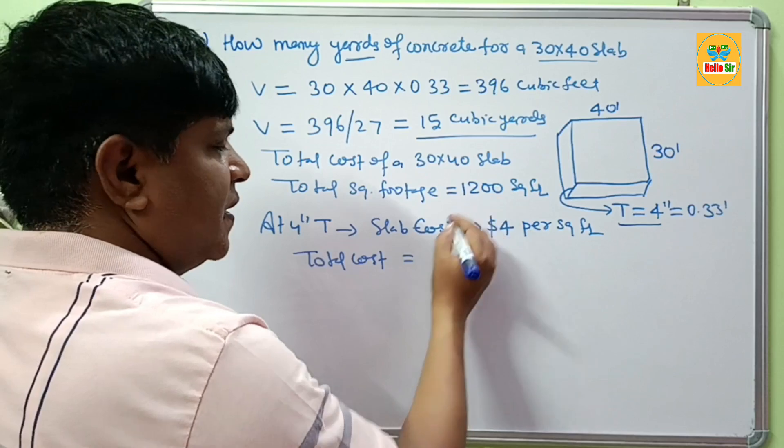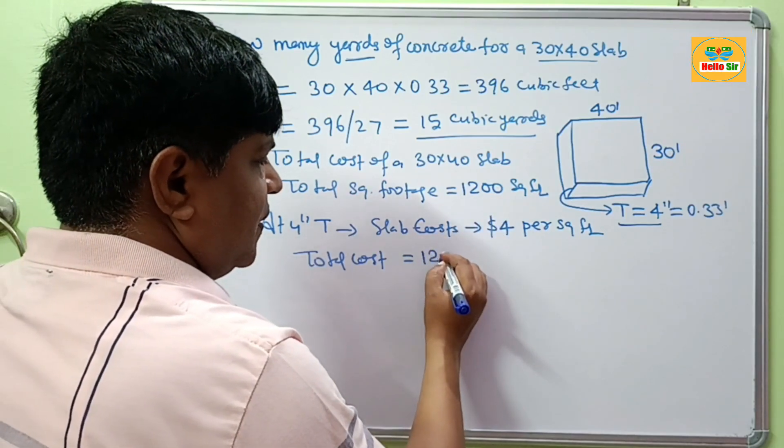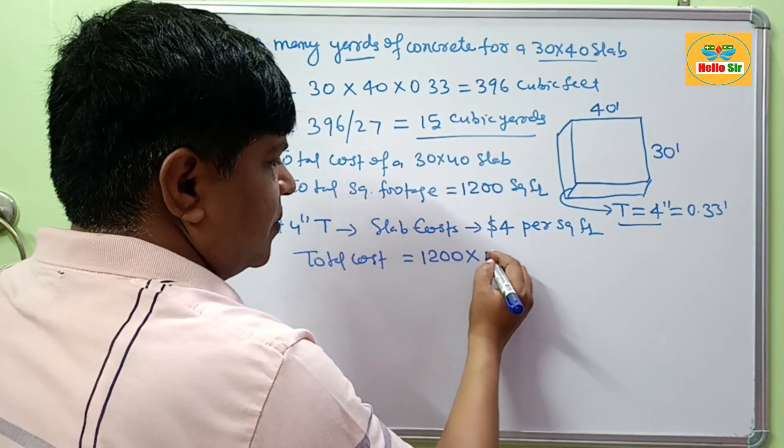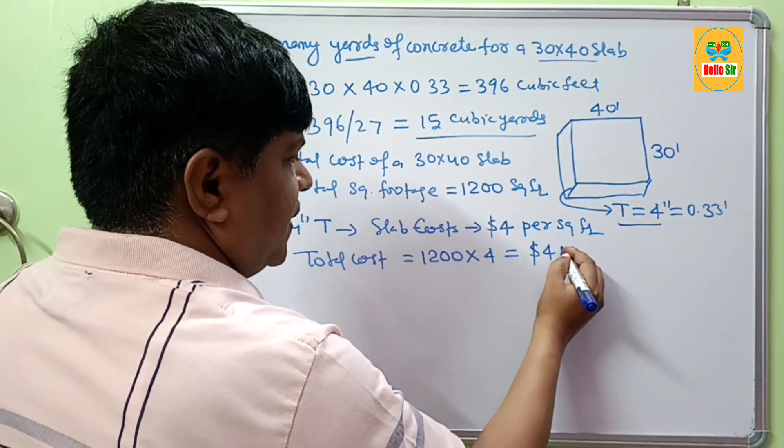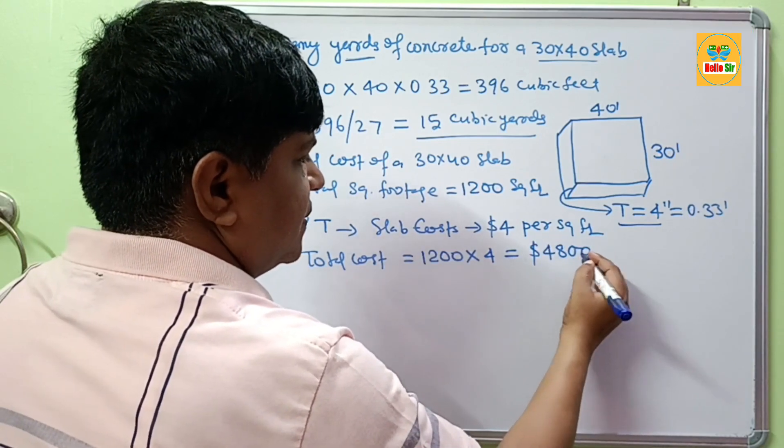Then you multiply 1200 by 4 to get $4,800.